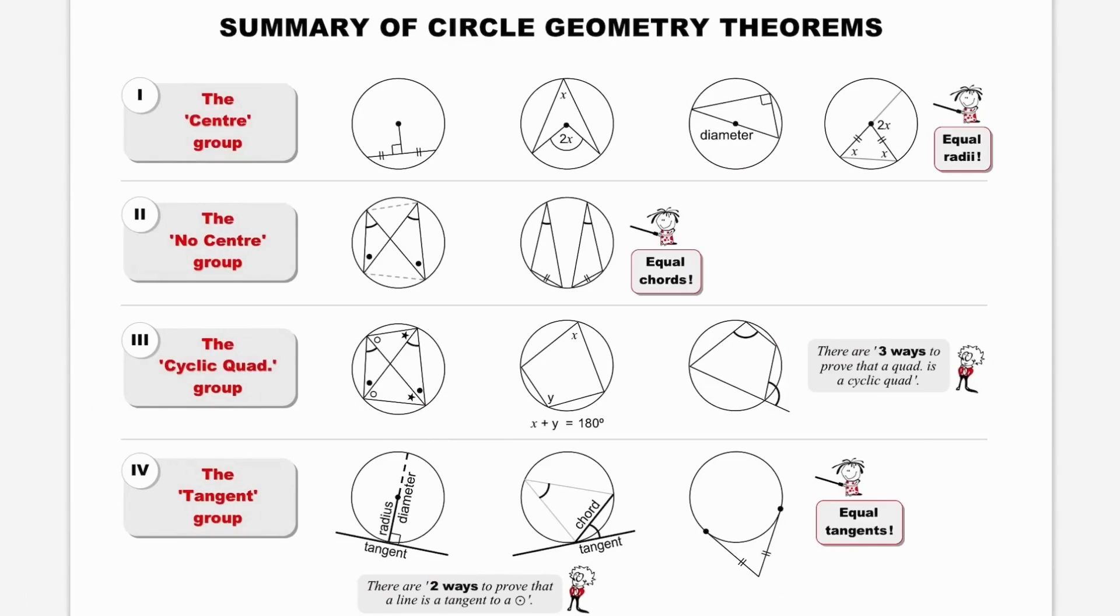And then we come to circles. We have four groups: what to look out for if you are given a centre, no centre, a cyclic quadrilateral, or a tangent. This page is in the Grade 12 2-in-1 Math Study Guide.